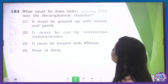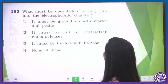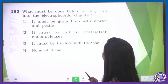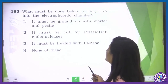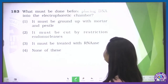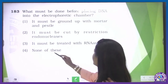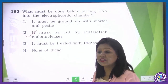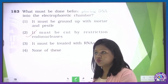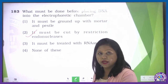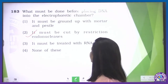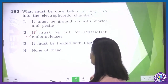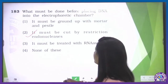What must be done before placing DNA into the electrophoretic chamber? It must not be ground up. It must be cut by restriction endonuclease — correct; the digesting activity of restriction endonuclease is verified once we put the DNA fragments into the agarose gel. Treatment with RNase is done in the purification step, not here. So the second option is correct.